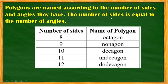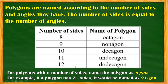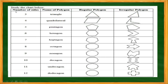Again, the number of sides is equal to the number of angles. For a polygon with n number of sides, the polygon is named n-gon. For example, if the polygon has 21 sides or 21 angles, it would be named a 21-gon. So let's study the chart showing the number of sides, the name of the polygon, the regular polygon, and the irregular polygon.